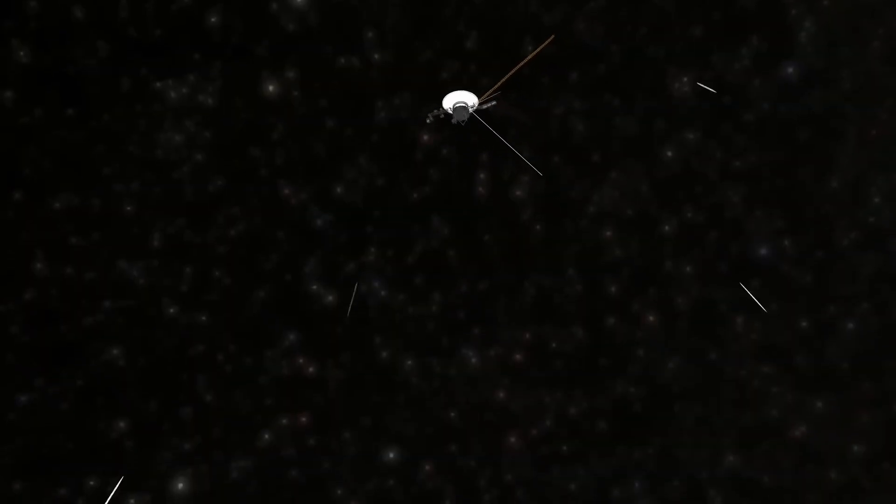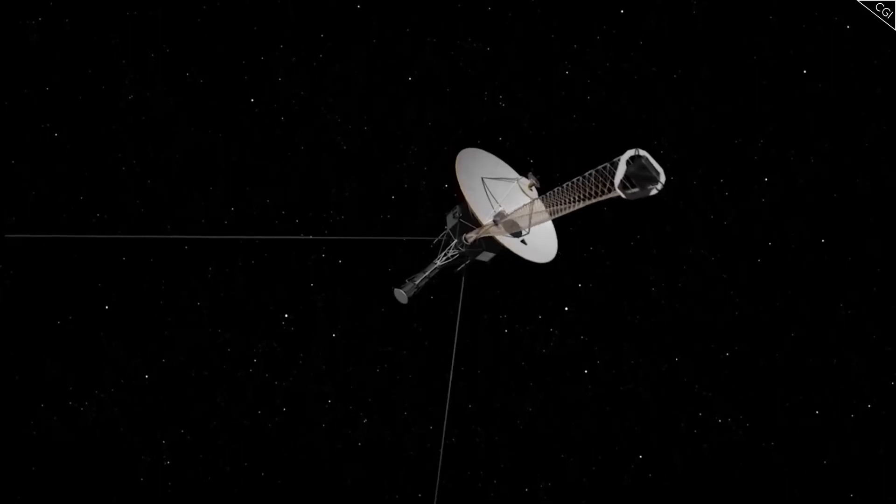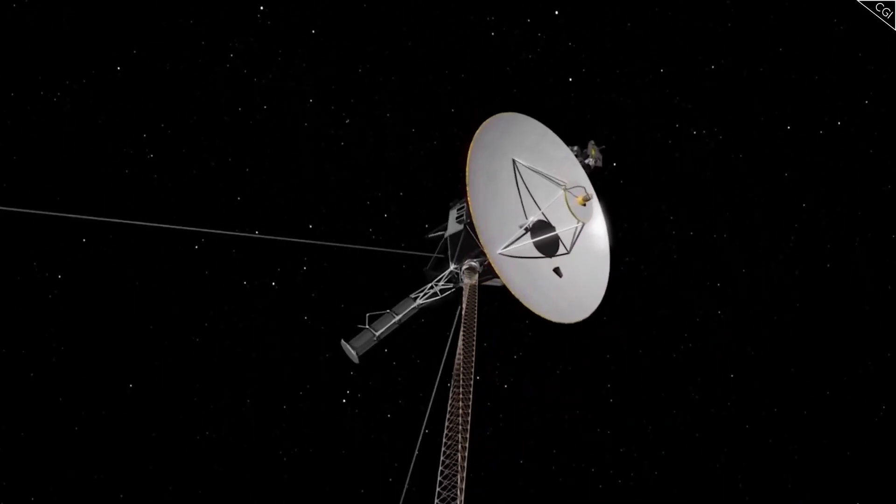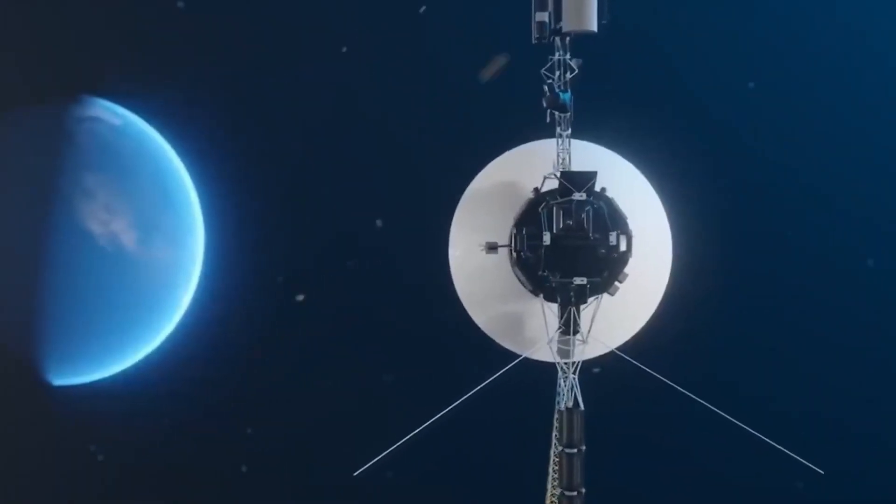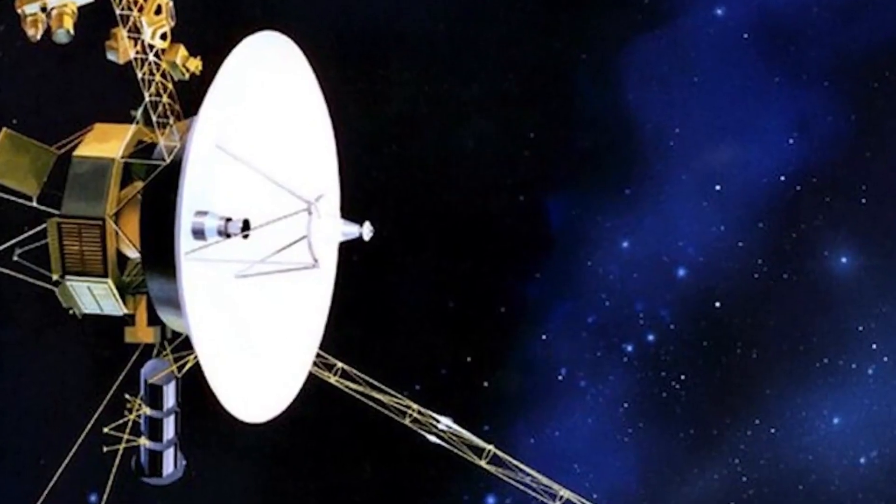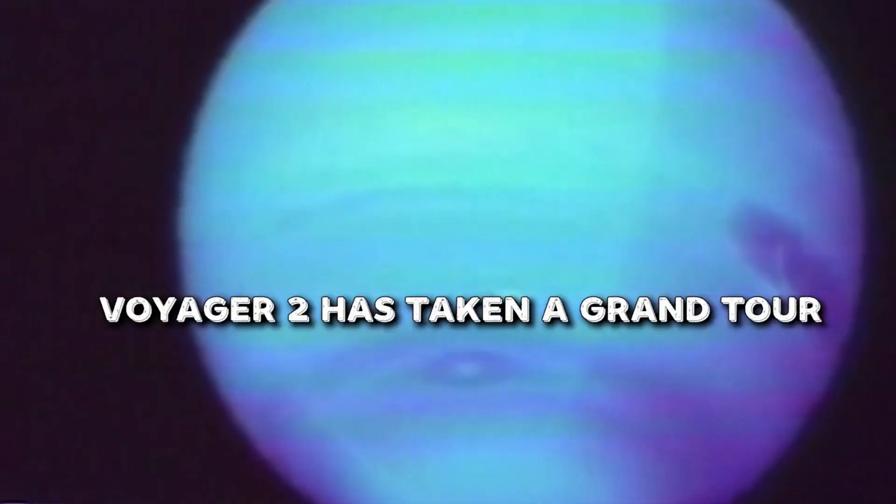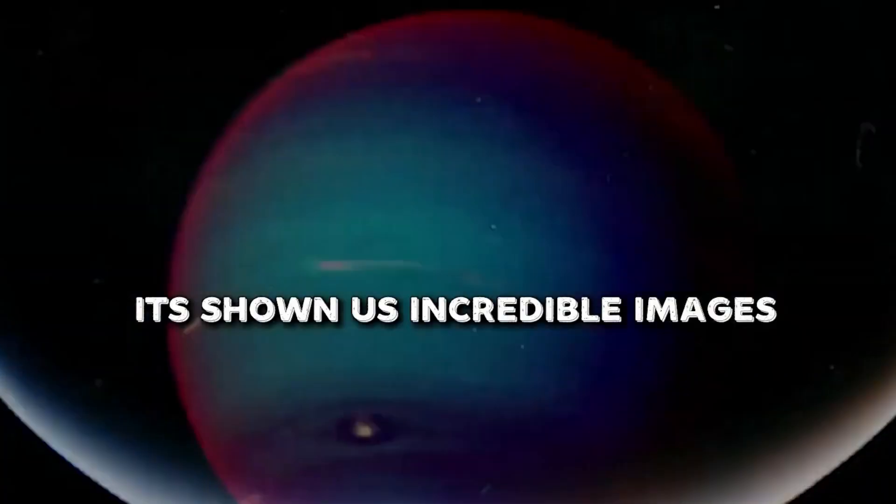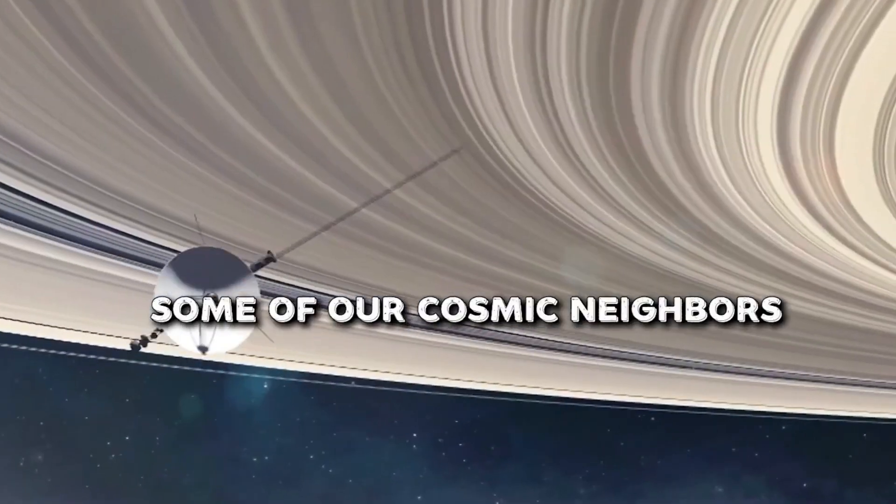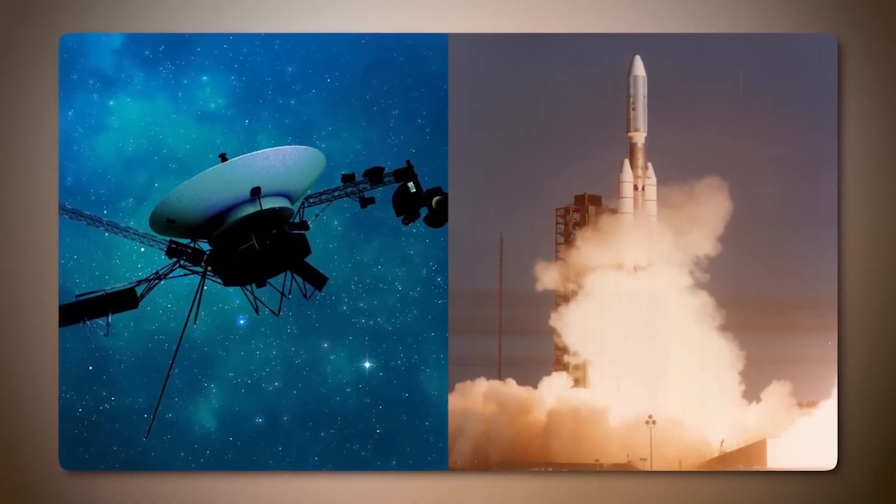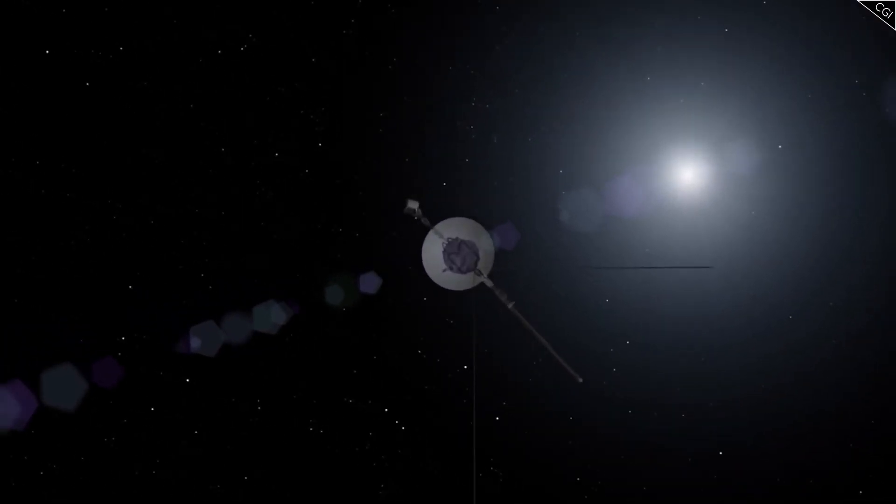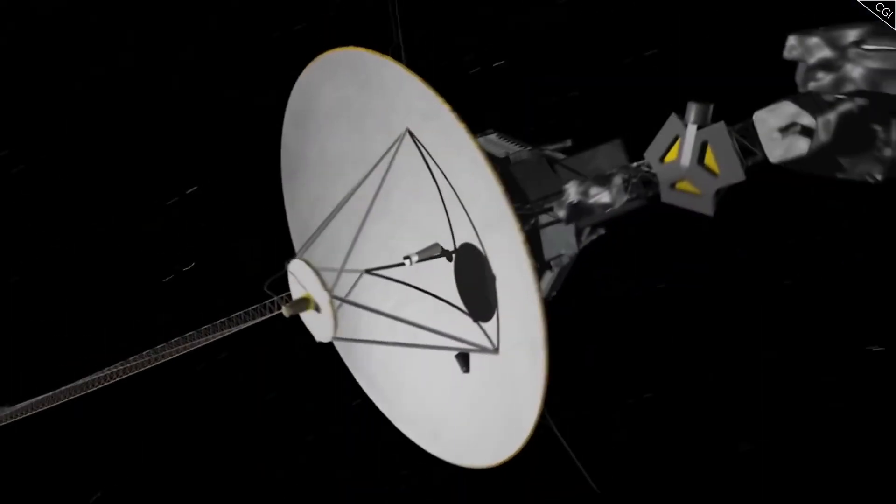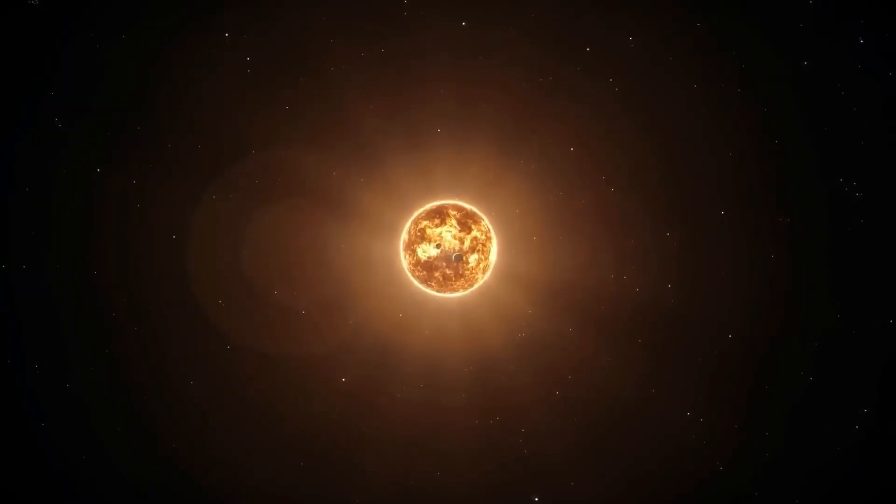The Voyager missions capitalized on a rare planetary alignment that occurs once every 107 years, allowing the spacecraft to perform gravitational slingshots from one planet to another, conserving their limited fuel. Despite launching second, Voyager 1 was the first to reach Jupiter and Saturn, focusing on these planets while Voyager 2 explored Jupiter, Saturn, Uranus, and Neptune over a decade. The data transmitted by the Voyagers have profoundly shaped our understanding of the outer solar system. As a unique touch, each spacecraft carries a golden record, a time capsule of Earth's sounds and music intended to communicate with potential extraterrestrial life.